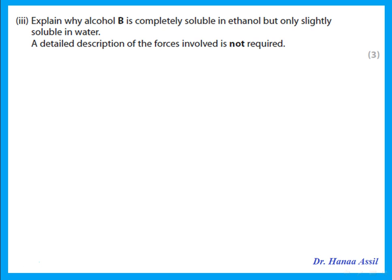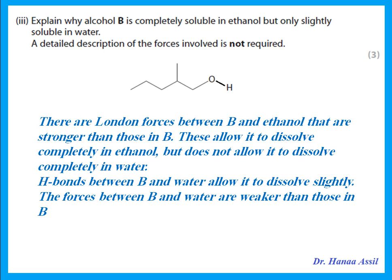Explain why alcohol B is completely soluble in ethanol but only slightly soluble in water. The London dispersion forces between B and ethanol are stronger than those within the B molecule itself, allowing complete dissolution in ethanol. However, although hydrogen bonds between B and water allow it to dissolve slightly, the forces between B and water are weaker than those within B, so it does not dissolve completely in water.